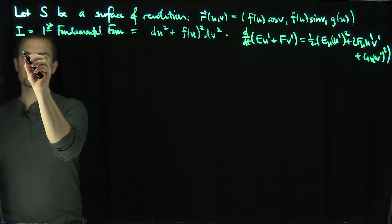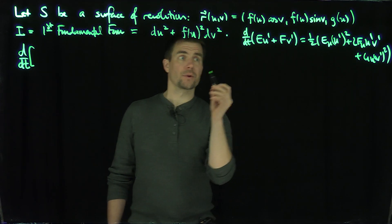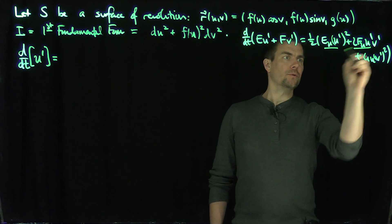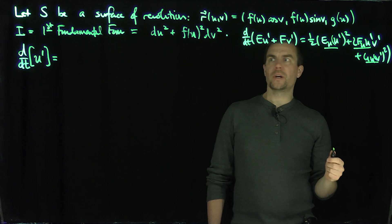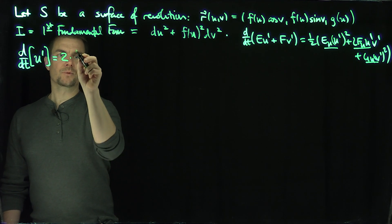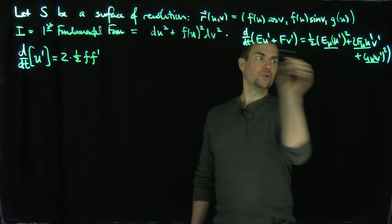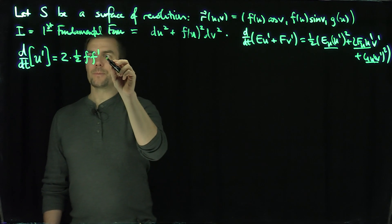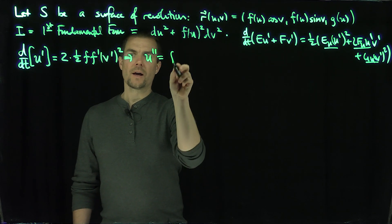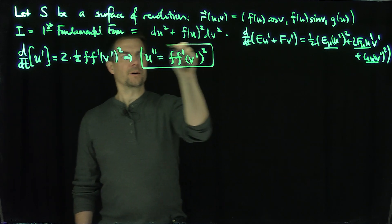Let's fill in the first geodesic equation for this surface of revolution. Since E = 1, we have d/dt of u'. Since E_u = 0, F_u = 0, and G_u = 2f·f', we get d/dt(u') = one-half · 2f·f' · v'². This simplifies to: u'' = f·f'·(v')².